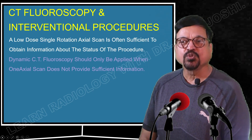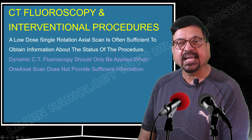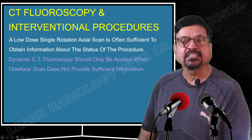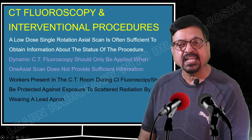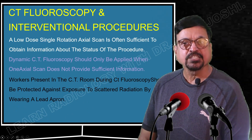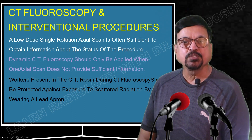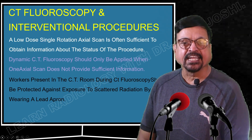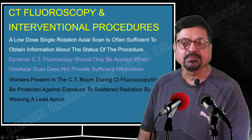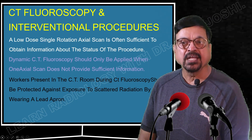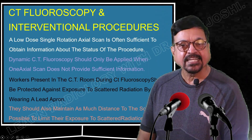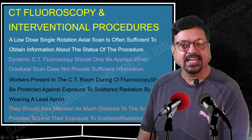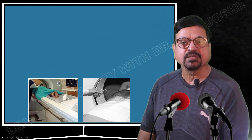Dynamic CT fluoroscopy should be applied only when a single axial section does not provide sufficient information — it should be reserved for cases where axial scans are inadequate. Workers present in the CT room during fluoroscopy must be protected — not just the radiologist but also all staff and the patient. Proper precautions include wearing radiation badges, a lead apron, and all necessary measures to protect from radiation exposure.